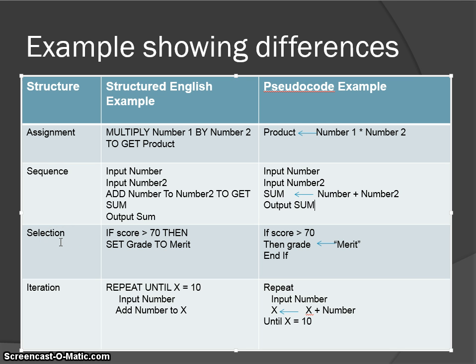Selection is another structured programming approach. Selection is the use of what's called if statements — it brings a decision into our programming. An example: if score is greater than 70, then the grade is assigned merit. If it's raining, I'll put up an umbrella. If it's cold, I'll wear a coat. If it's windy, I might wear a scarf. If the weather is sunny and cold, then I might wear a light jacket. If money in my pocket is more than £5, then I might treat myself to a takeaway. So these are examples of if statements — that is selection.